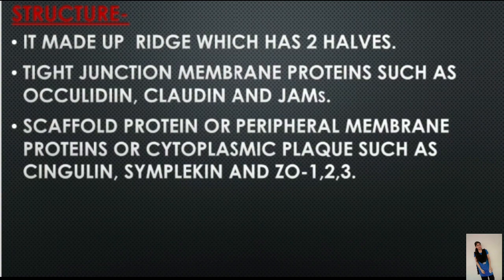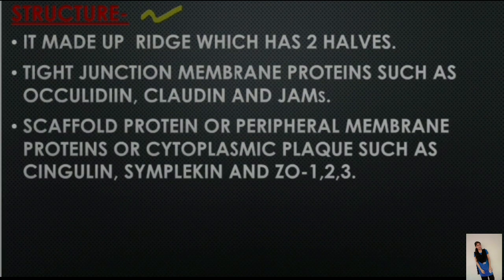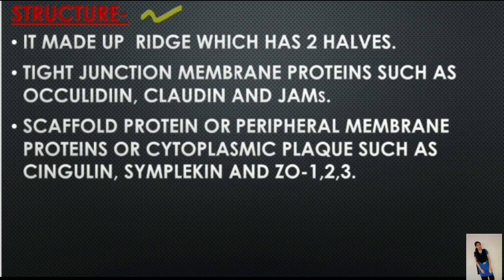Now we will see the structure of tight junction. It is made of ridges which have two halves — one half of the ridge is formed by one cell and another half is from the other cell. Both halves of the ridge fuse with each other very tightly and occupy the space between two cells. Each half of the ridge consists of tight junction strands.